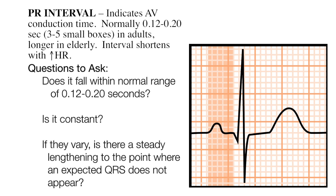Fourth, assess the PR interval, which indicates AV conduction time, normally 0.12 to 0.2 seconds, or 3 to 5 small boxes in adults, and longer in the elderly. The interval shortens with an increased heart rate. Ask yourself: does it fall within the normal range of 0.12 to 0.2 seconds? Is it constant? And if they vary, is there a steady lengthening to the point where an expected QRS does not appear?